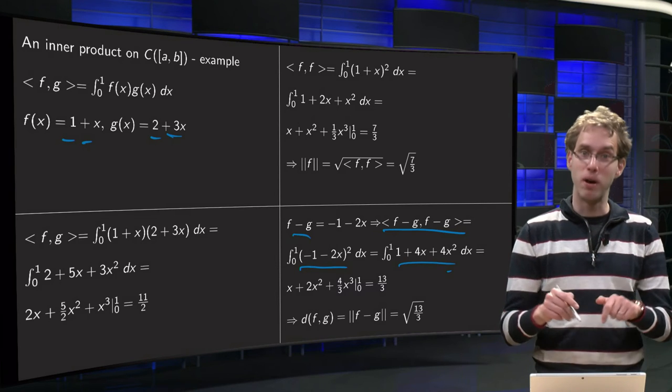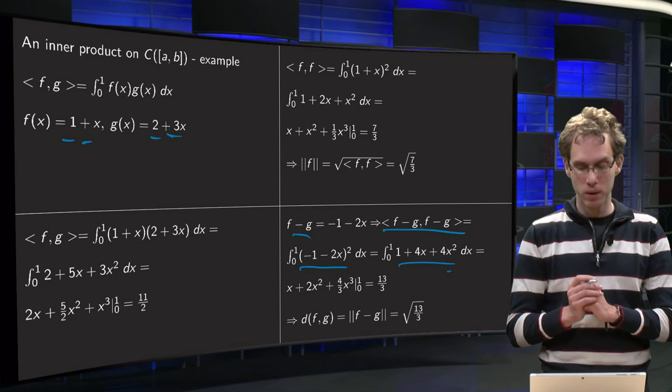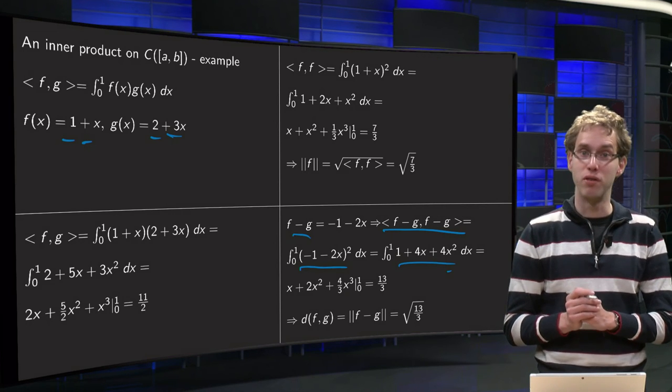Integrate all terms. You get x plus 2x squared plus from the last one 4 over 3 x cubed. Plug in the boundaries, lower boundary again 0, so that's nice. And we get 1 plus 2 plus 4 over 3, so 3 plus 4 over 3 equals 13 over 3.